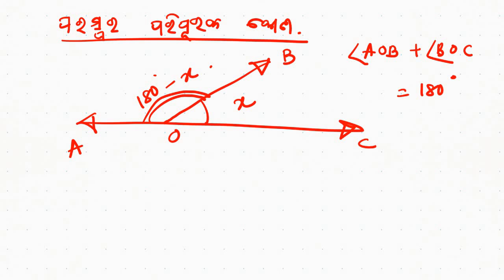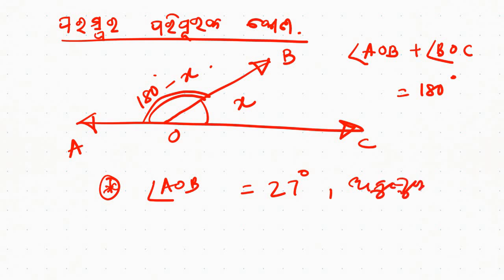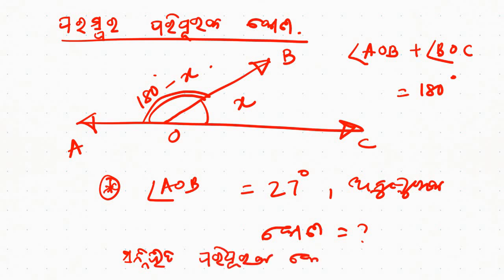If you have angle AOB equal to 27 degrees, which is the value of the other one? If you don't have time, I'll remember — definitely do it. At this point, see 90 degrees. Which one is equal to 90 minus 27 degrees? It will be 63 degrees. If you have 16 degree in Irish language, you have received 26 degrees.